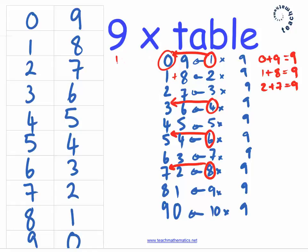So 1 take 1 is 0. 2 take 1 is 1. 3 take 1 is 2. And then just ask myself, what digit do I need to add to that to make 9?